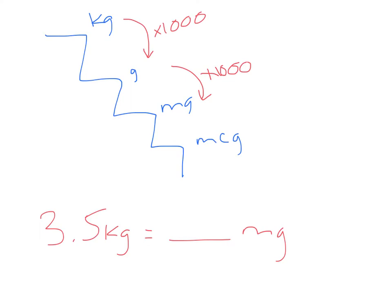So I'm going to take 3.5 and multiply it by 1000 twice. A lot of times people want to accidentally multiply that by 2000, but that's going to give us a wrong answer. Using the stair step method, remember two steps means two times. If I take 3.5 and multiply it by 1000, that's going to be 3500.